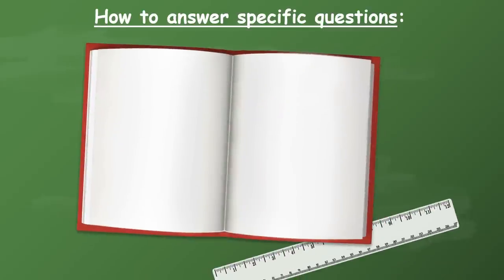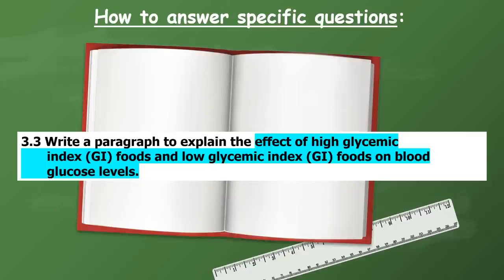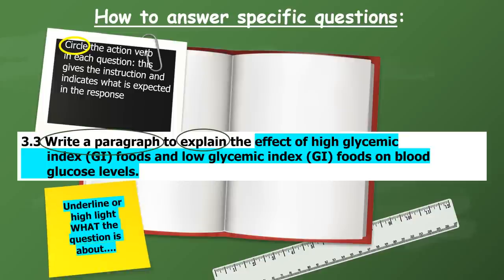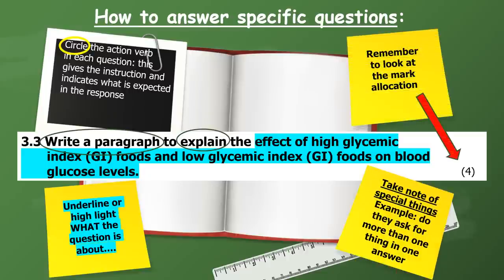Now we're going to look at how to answer specific questions. When you get a question like: write a paragraph to explain the effects of high glycemic index (high GI foods) and low glycemic index (low GI foods) on blood glucose levels — circle all the action verbs in each question. This gives you the instruction and indicates what is expected. In this case, it will be to write a paragraph and explain. Underline or highlight what the question is about. Always look at the mark allocation, as that will tell you how much to write. Also note if they ask for more than one thing — here they want the effect of both high GI and low GI.